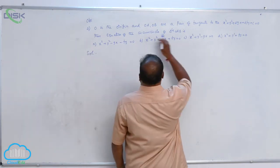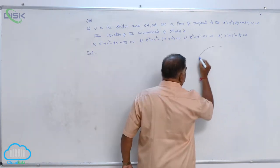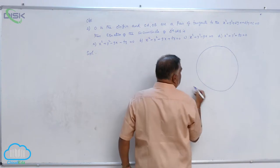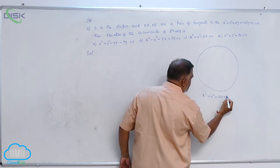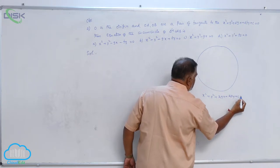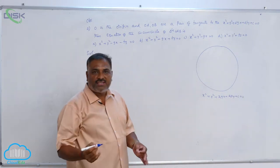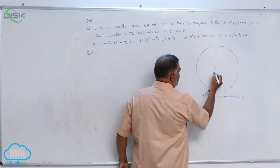Let us see, first of all, given circle is x square plus y square plus 2Gx plus 2Fy plus C is equal to 0. We know that center is nothing but minus G minus F, center minus G minus F.